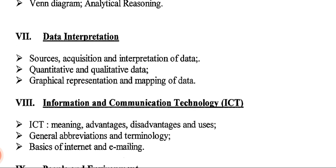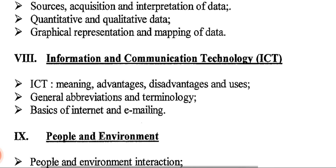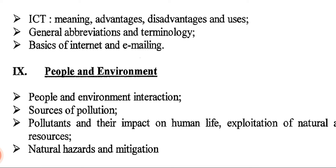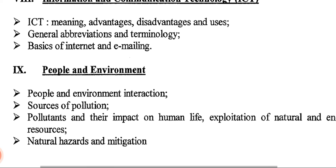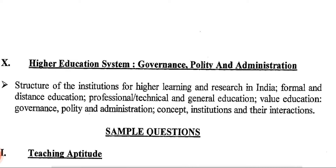Section eight is Information and Communication Technology (ICT), covering its meaning, advantages, disadvantages and uses, general abbreviations and terminology, and basics of internet and emailing. Section nine is People and Environment, with questions from people-environment interaction, sources of pollution, pollutants and their impact on human life, exploration of natural and energy resources, and natural hazards and mitigation. This is very vast content.